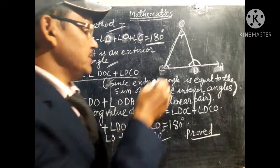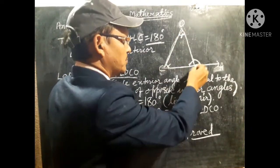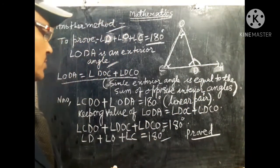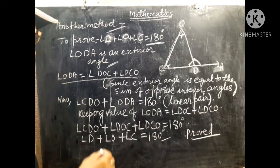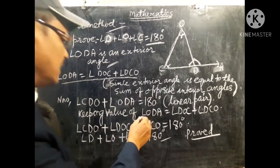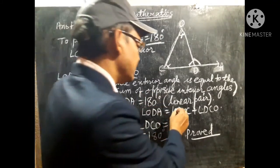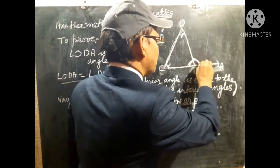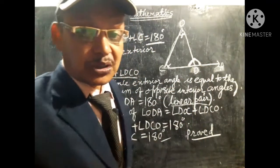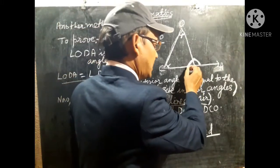It means if you take this angle and this angle, they will be equal to this exterior angle. Now, using these things: angle CDO plus angle ODA equals 180 degrees — that is a linear pair. The sum of this angle and this angle equals 180 degrees.